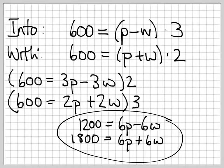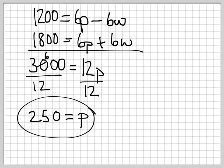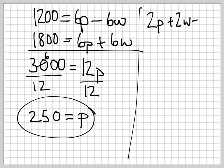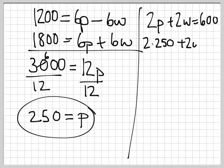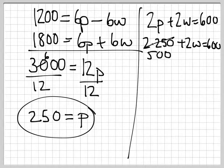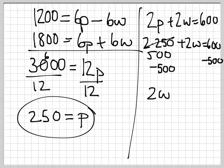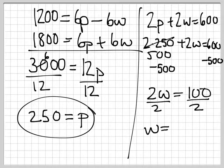Now let's look back at one of our other equations so we can figure out what w has to be. So let's look at 2p plus 2w equals 600. 2 times 250 plus 2w equals 600. And so if I subtract 500 from both sides, I get 2w equals 100 or w equals 50.